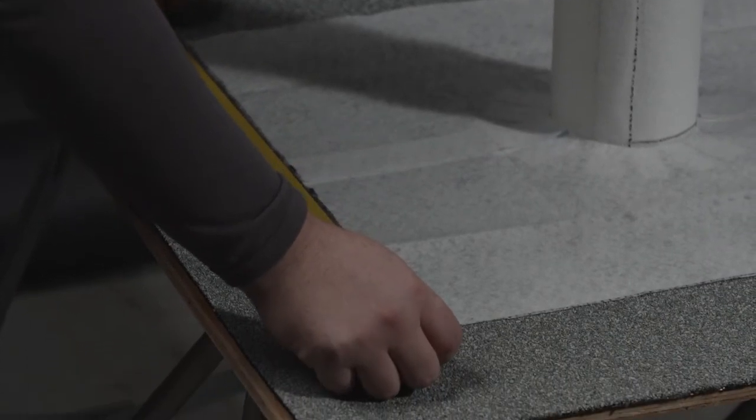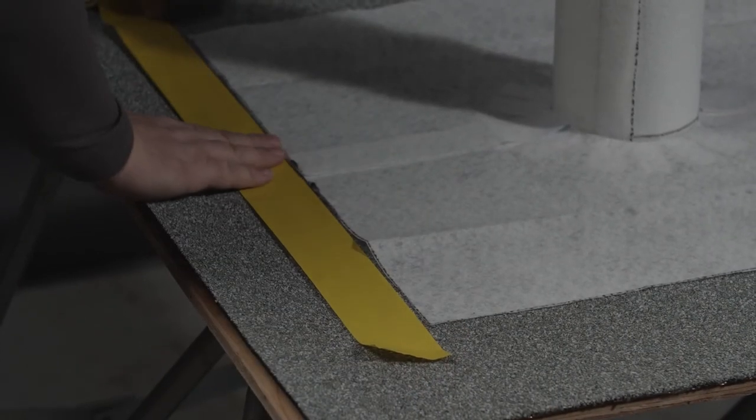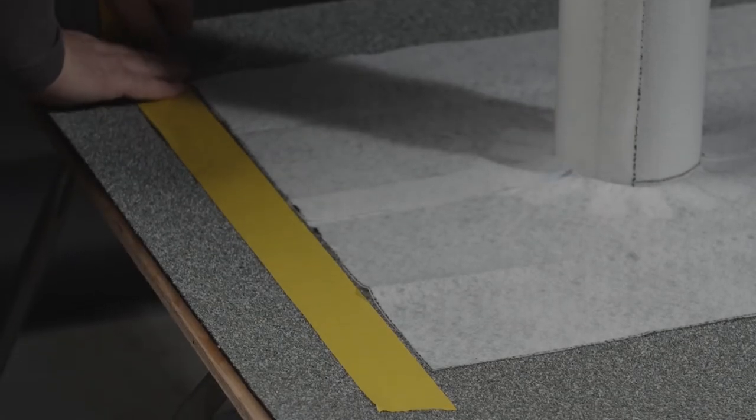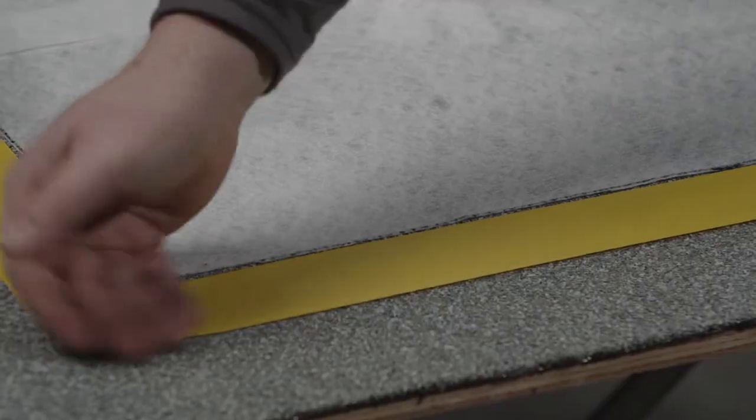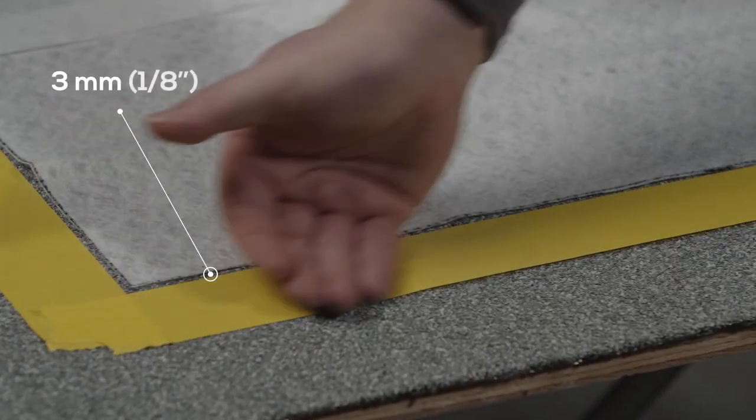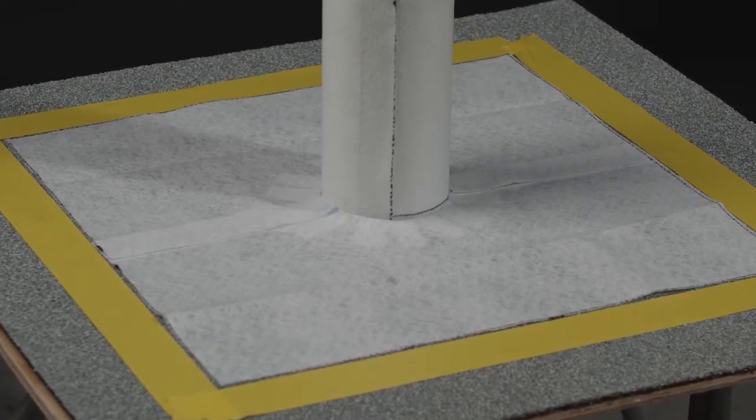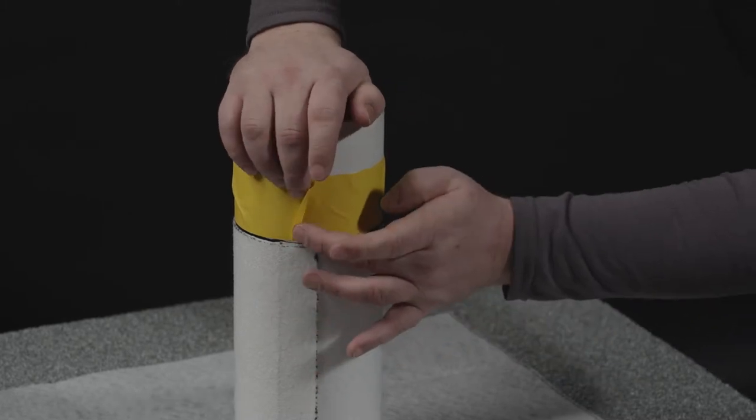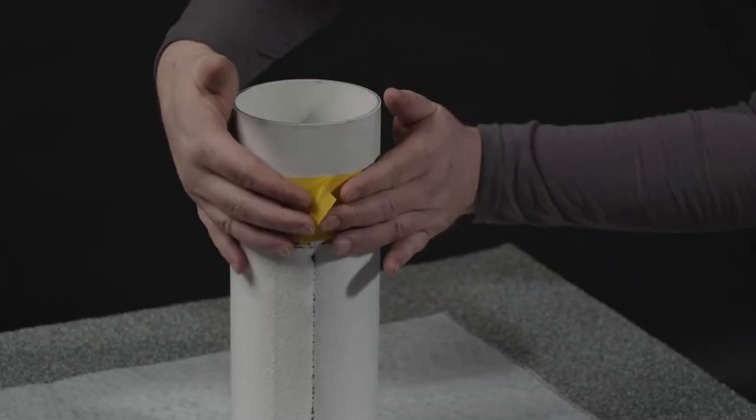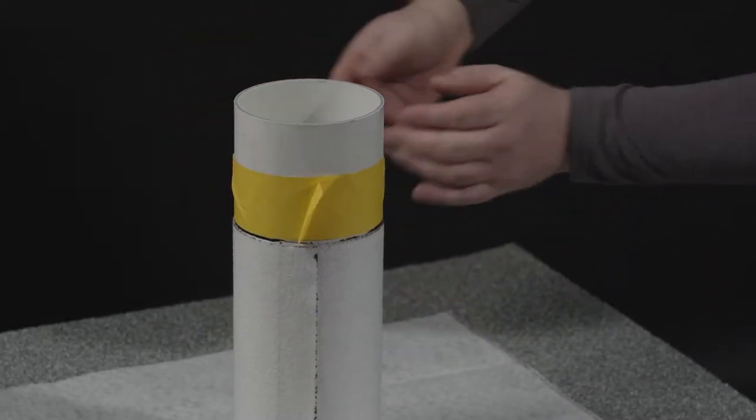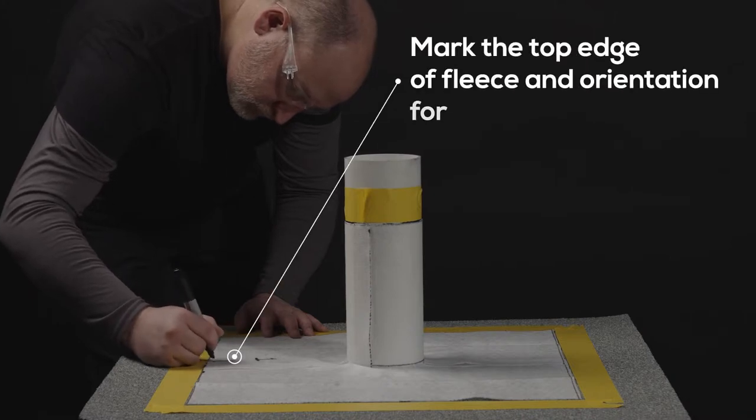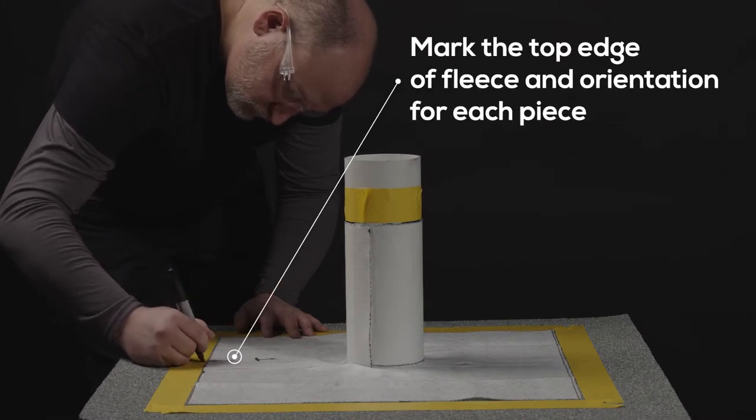Apply masking tape at the termination of the fleece on the substrate where the PMMA resin will be applied over an existing membrane. Tape off 3 mm or 1 eighth of an inch past the fleece on the field surface and on the pipe. Leave a small tag at the end of the tape on the pipe to make removal easier. Mark the top edge of fleece and orientation for each piece.